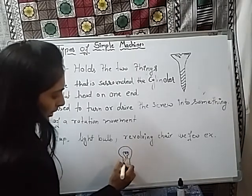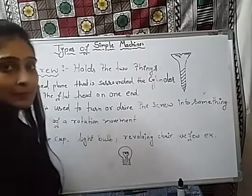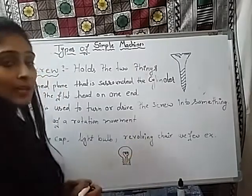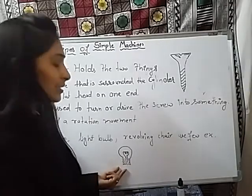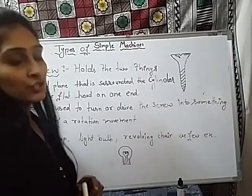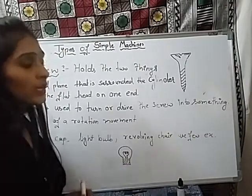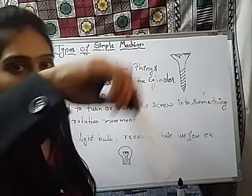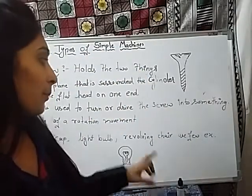You can see this inclined plane on the metallic cap, which is able to attach this bulb into its socket. The third example is a revolving chair — a chair which revolves around 360 degrees — and it is an example of the screw mechanism.